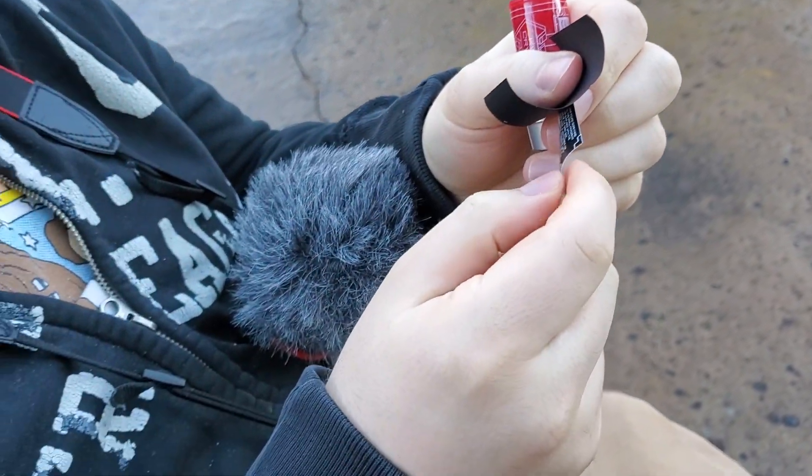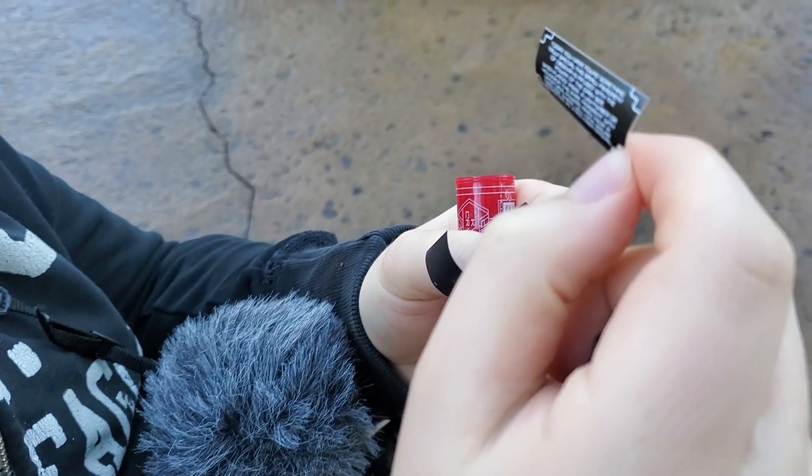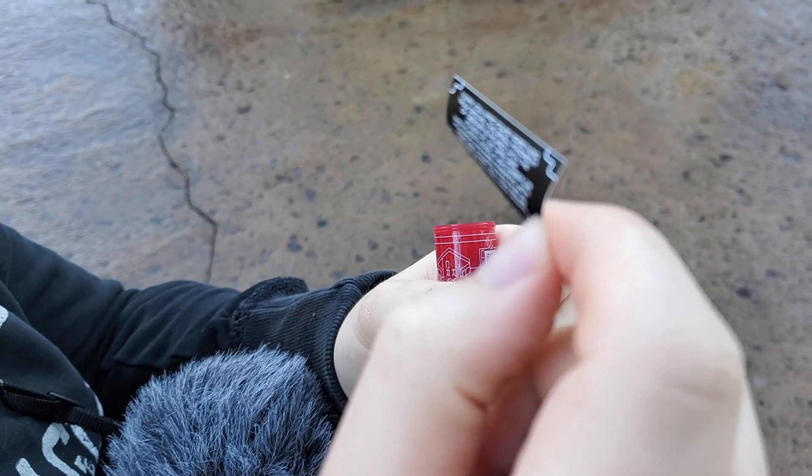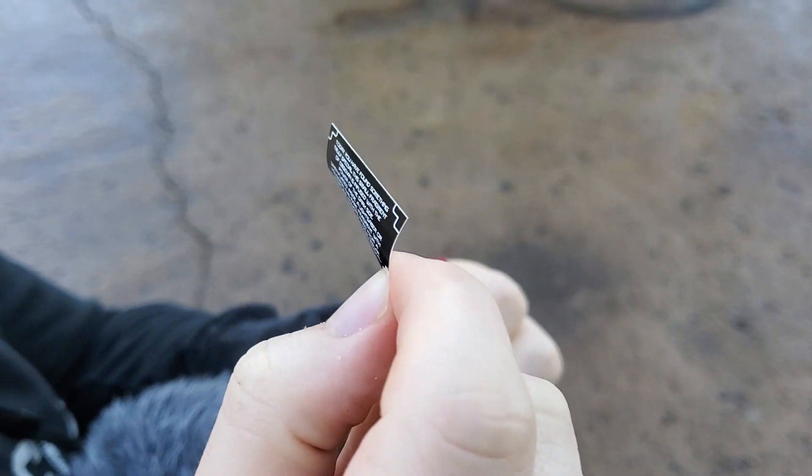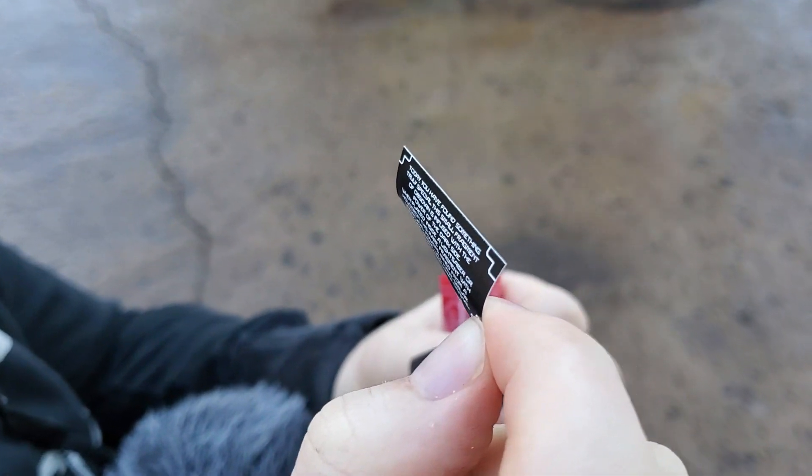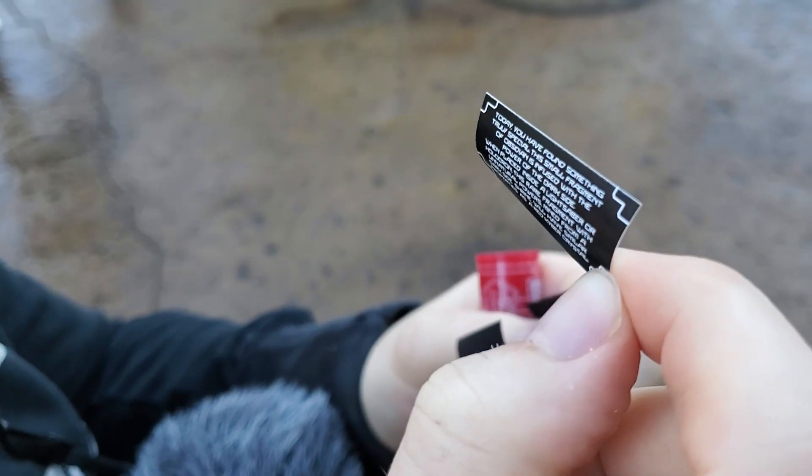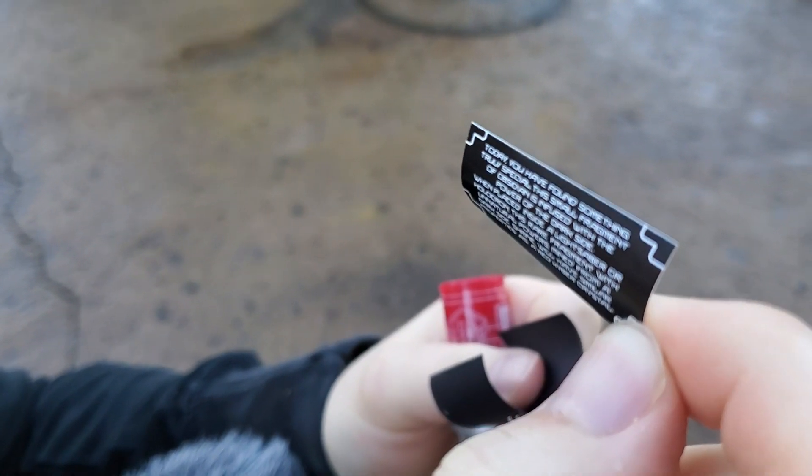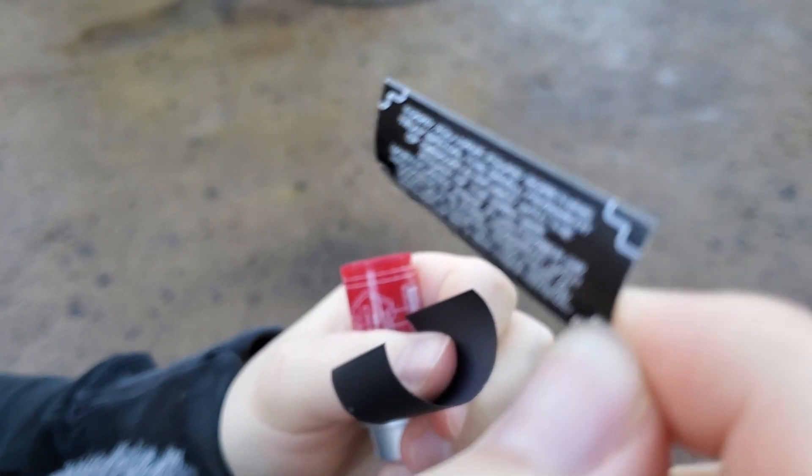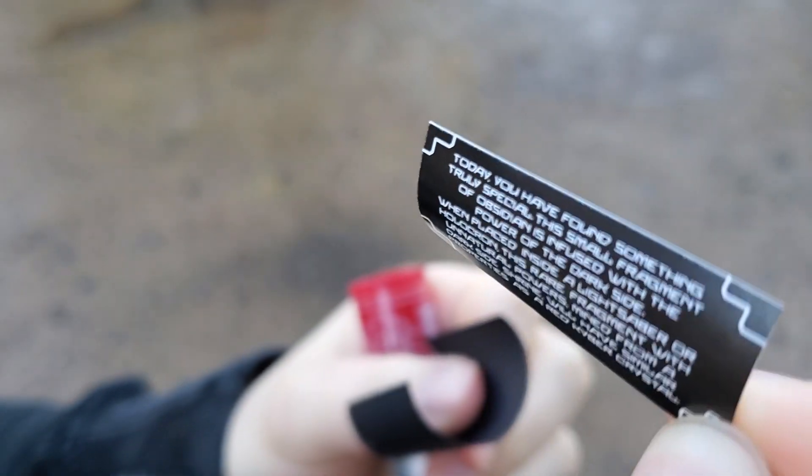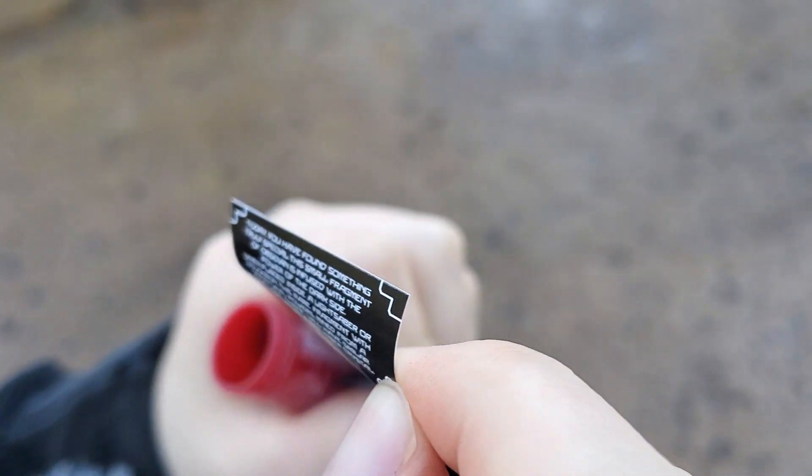It also comes with this note. What's the note say? It says, today you have found something truly special. This small fragment of obsidian is infused with the power of the dark side. When placed inside a lightsaber or holocron, this rare fragment with unnatural powers mined from a dark side shrine will have similar properties as a red kyber crystal.